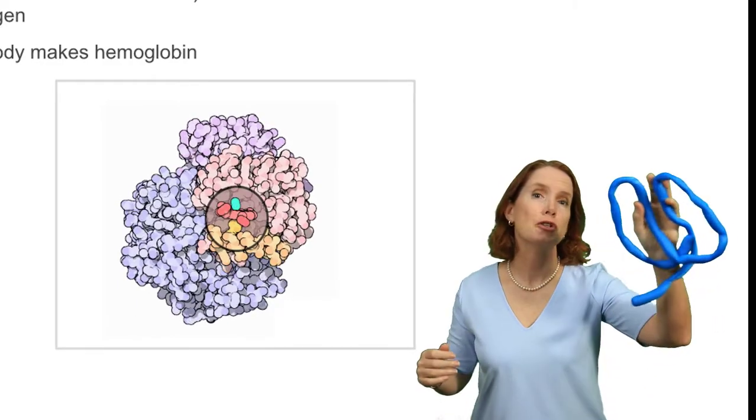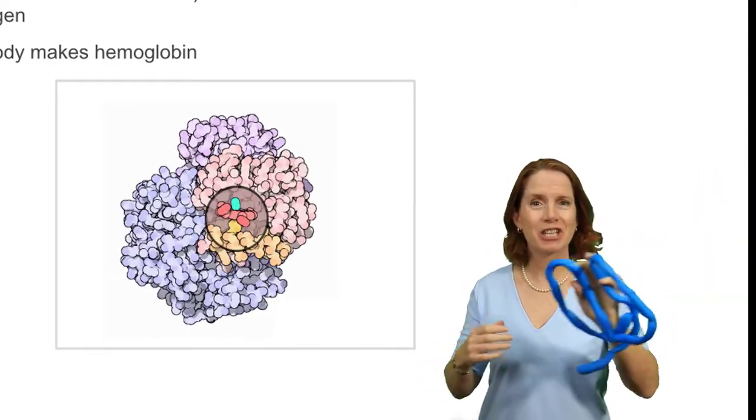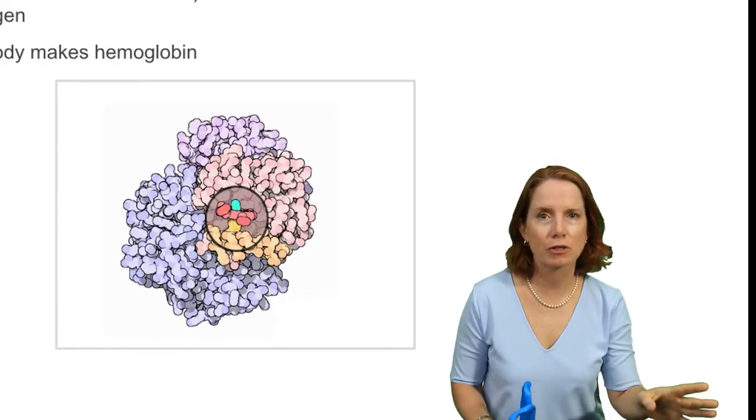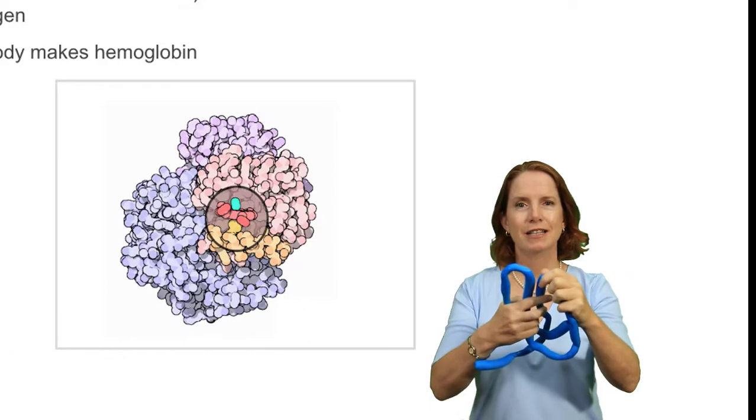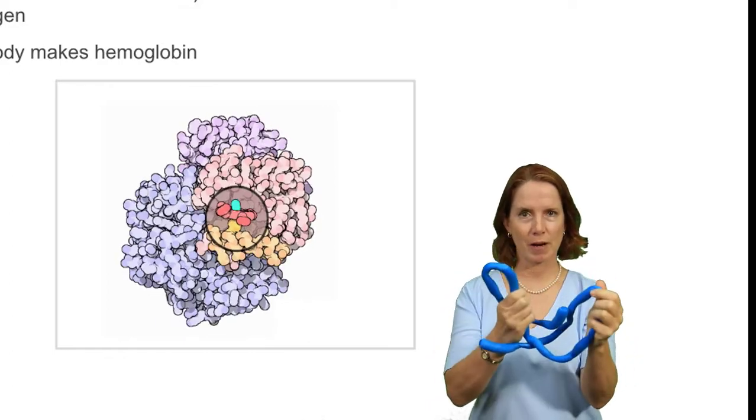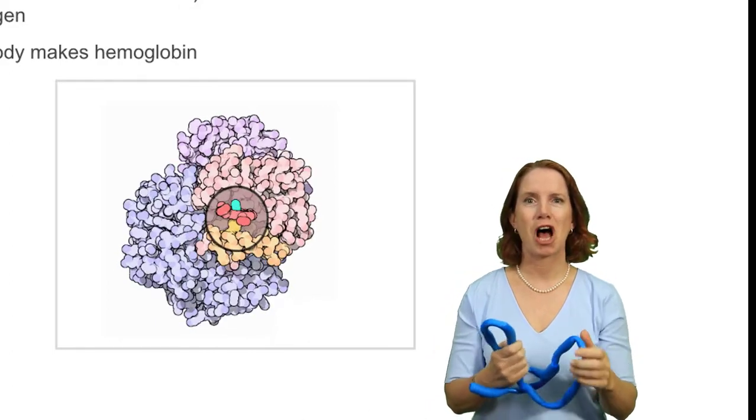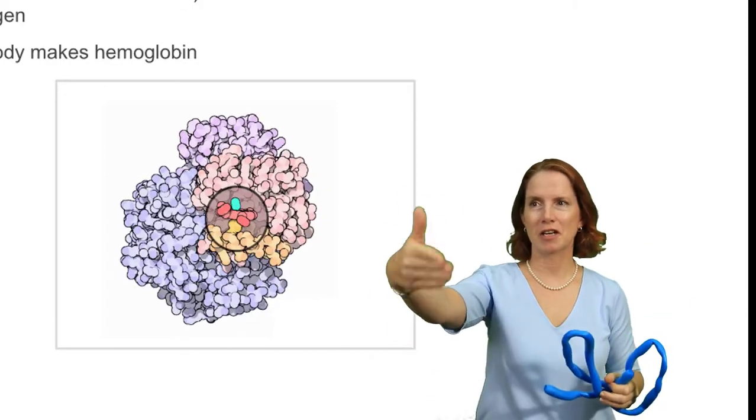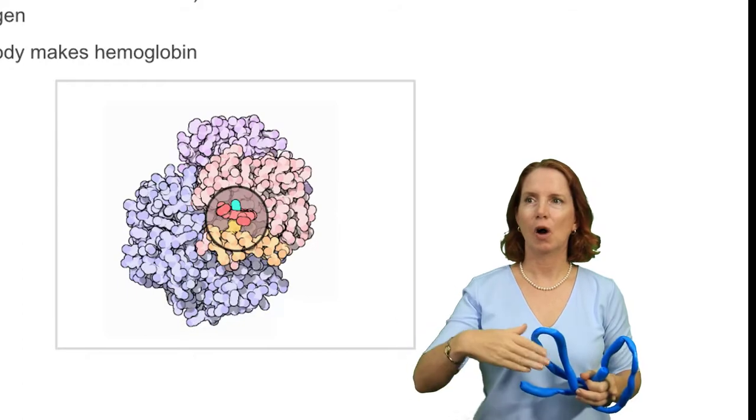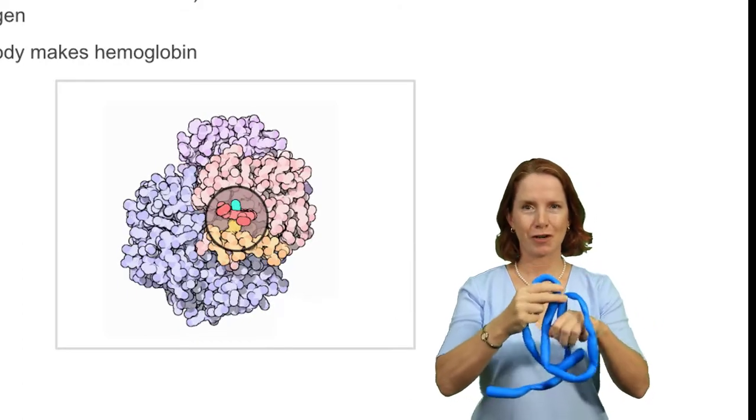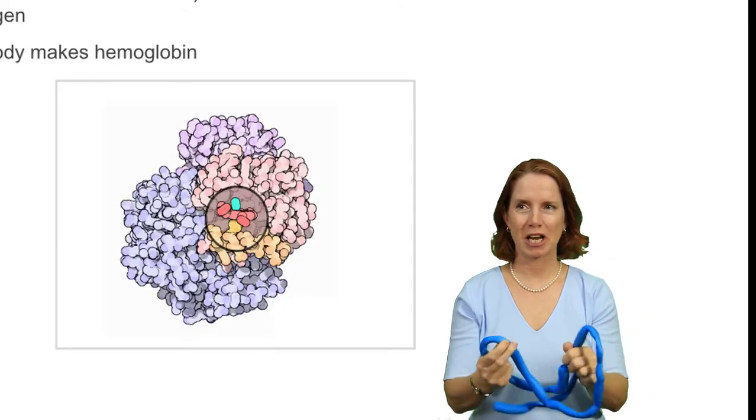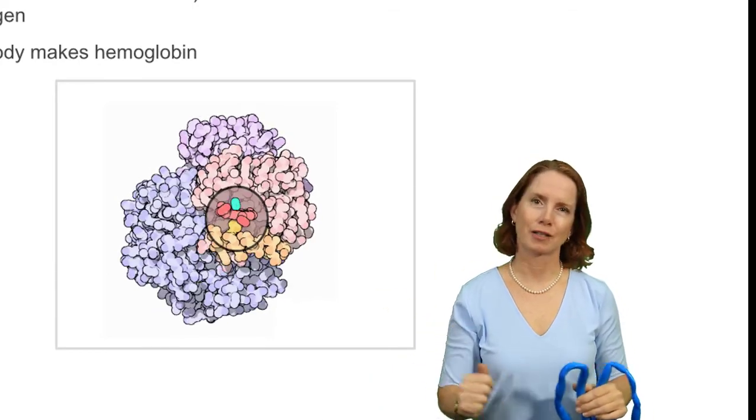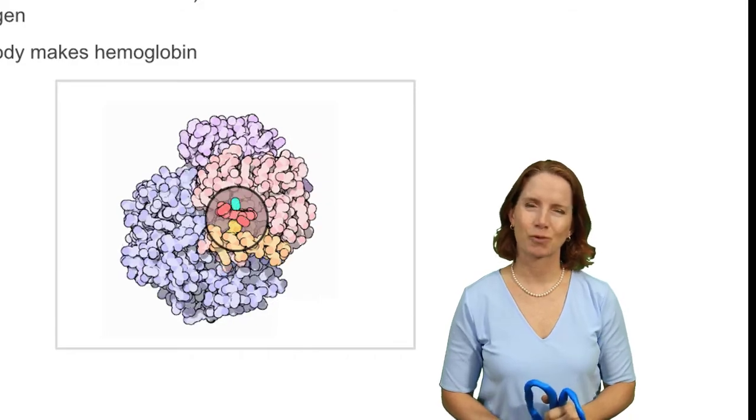As the hemoglobin circulates out of the lungs into the tissues, the pH drops ever so slightly, becoming ever so slightly more acidic. This causes a very slight conformational change in the hemoglobin protein that releases the oxygen. And that's illustrated in my slide as well. We can see the hemoglobin undergoing that conformational change and then either releasing or grabbing onto the blue oxygen molecule. So thanks for watching.